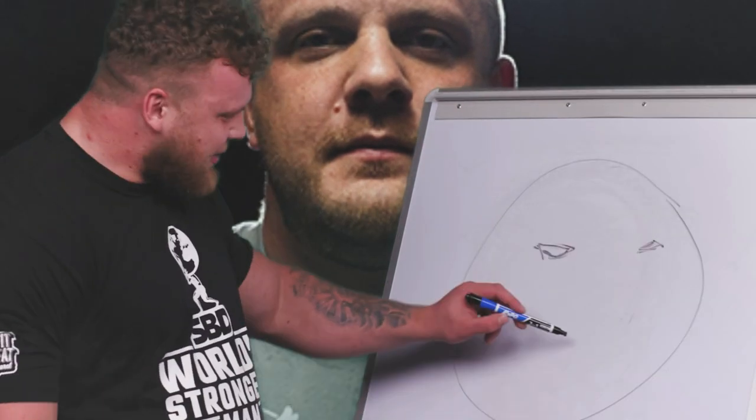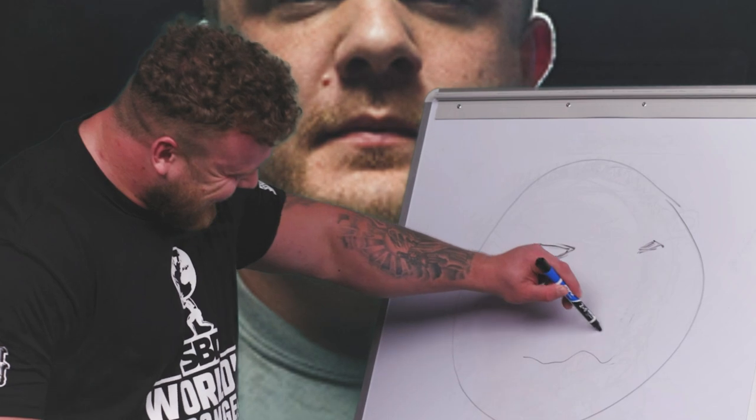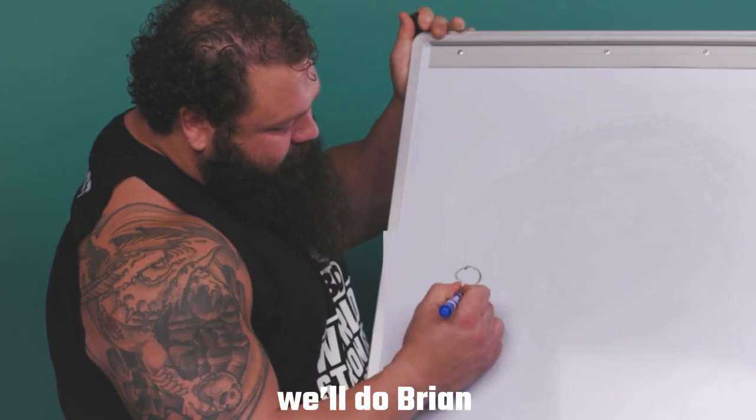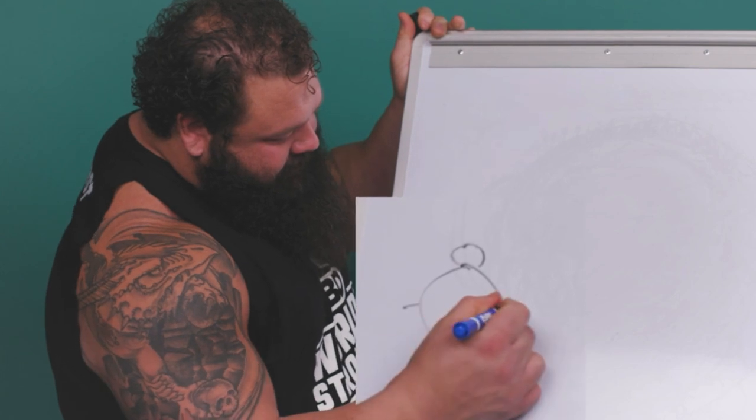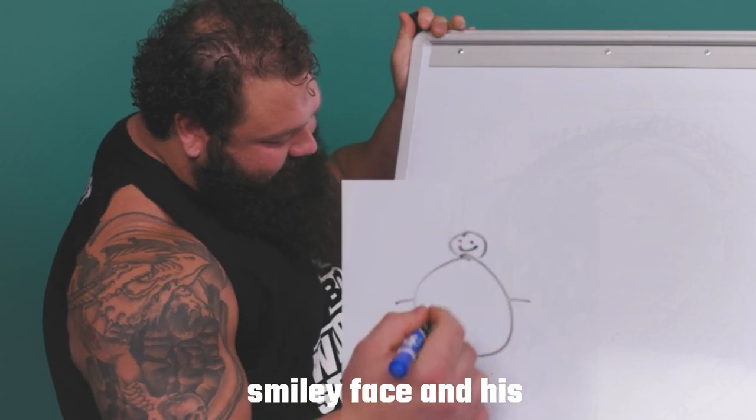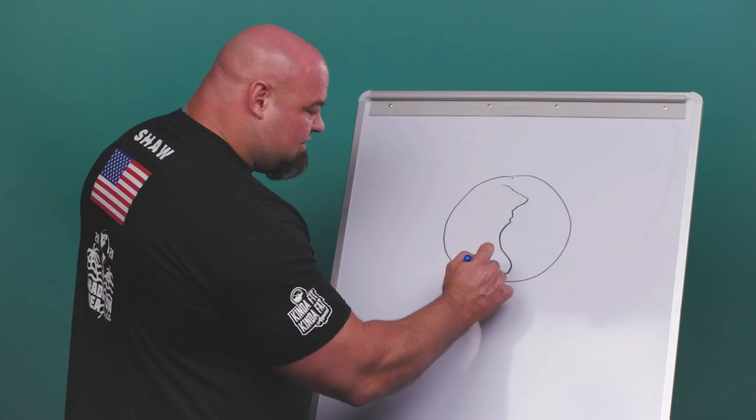So I'm going to draw my brother, Luke. We'll give him a half and half smile. We'll do Brian. There we go. A little smiley face in his B-brain shirt.